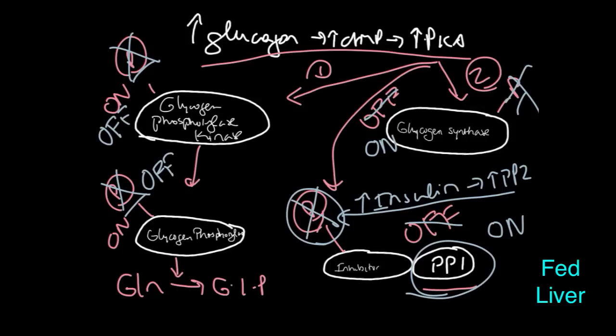So the wonderful hormonal stimulus of glucagon and insulin regulate these pathways. And in the fed state, you want to take the glucose that's extra, store it in your liver for a rainy day.